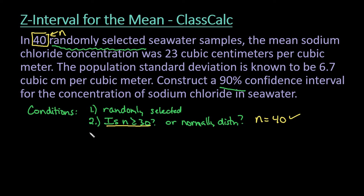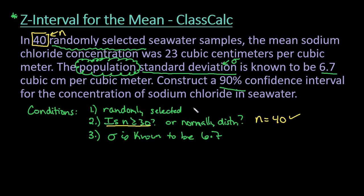The third one, which tells us whether we're going to use the z-interval for the mean or the t-interval for the mean, is what kind of standard deviation do you know? If you know the population standard deviation, then you're going to use z. If you know the sample standard deviation, then you're going to use t. For this one, since we do know the population standard deviation, we can say that sigma is known to be 6.7. Sigma, remember, is the symbol for population standard deviation. If it said sample standard deviation, then you would use the t-interval.